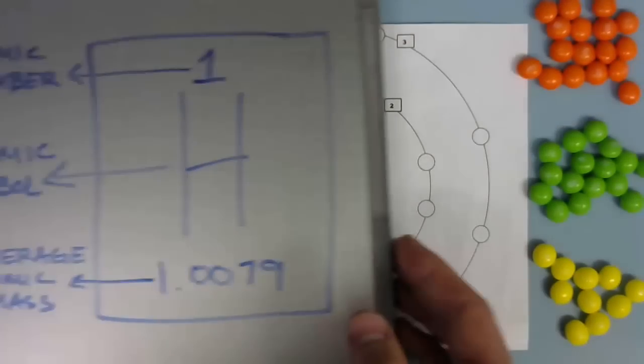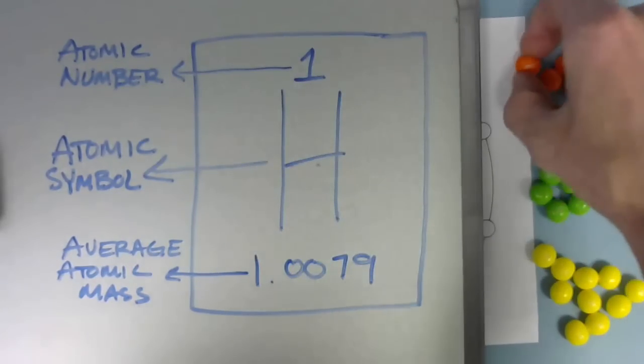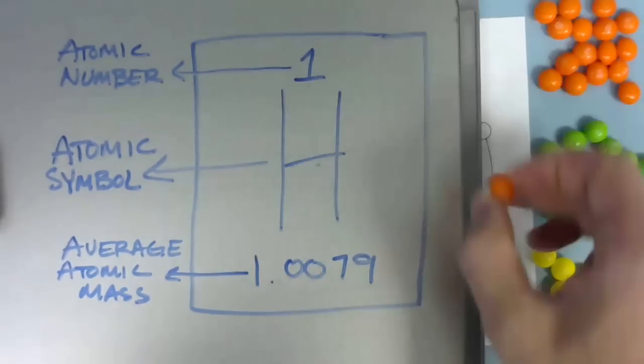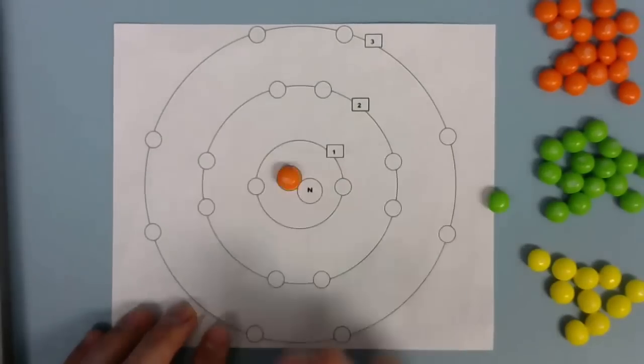If you remember, the atomic number of hydrogen was 1. So that means it has 1 proton. And because the proton goes in the nucleus, you're going to put 1 proton there.